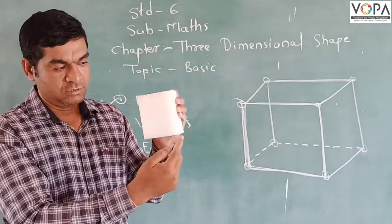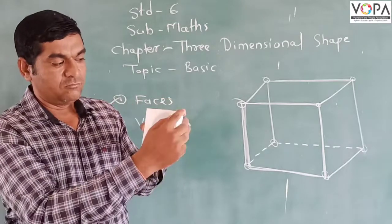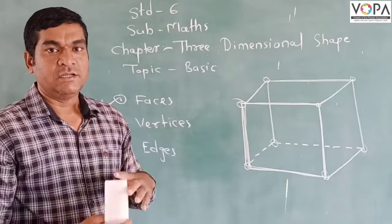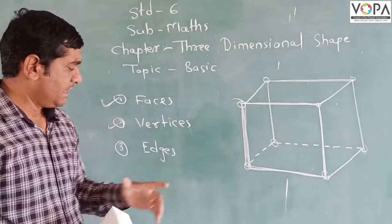Then 1, 2, 3, 4, and the back side again there, 1, 2, 3, and 4. They are the vertices for that particular diagram. And the last topic is edges.